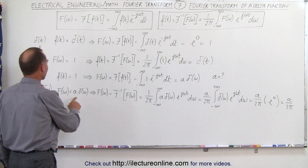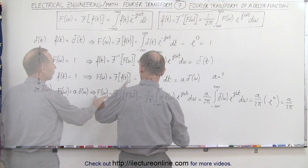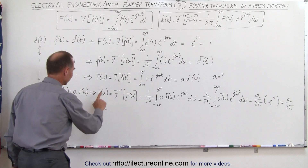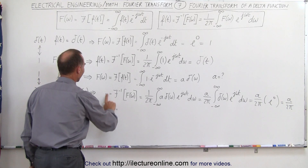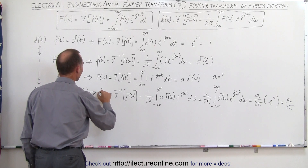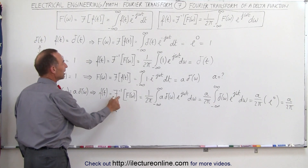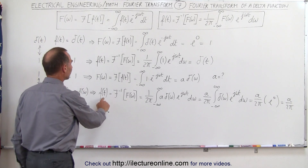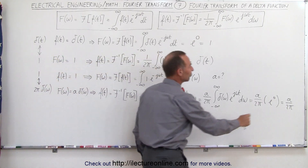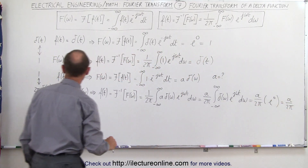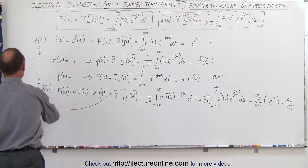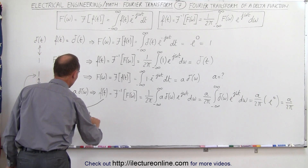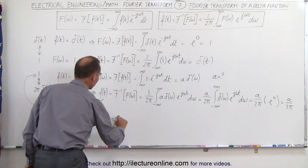Now coming back, I realize I made a mistake here — this should be f of t. The function in the time domain equals the inverse transform of the function in the frequency domain. So with that corrected, the function in the time domain equals a divided by 2π. And we realize that the function actually was equal to 1. In other words, 1 equals a divided by 2π, which then necessitates that a must equal 2π.